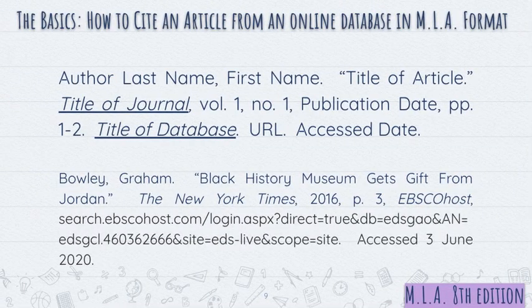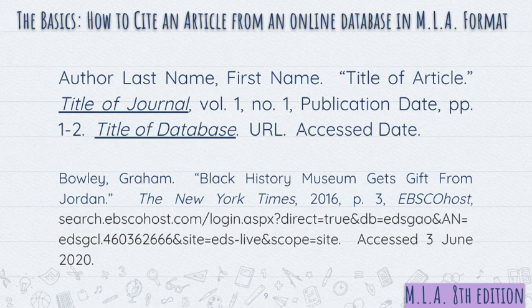If you're using the Michael Jordan article that we looked at in a previous lesson, this is what your source citation would look like. If you're missing information, you can just leave that part of the citation out. For example, this particular source doesn't have a volume number or issue number, so that was left out of the source citation — and that's okay.